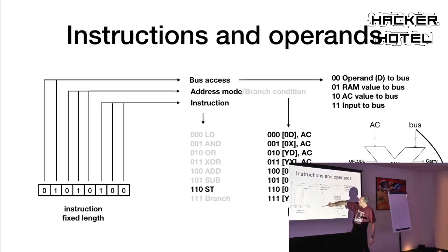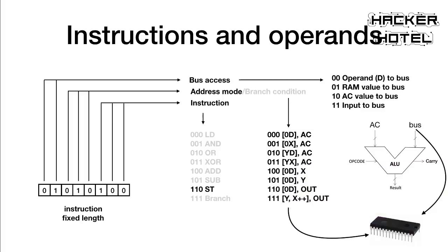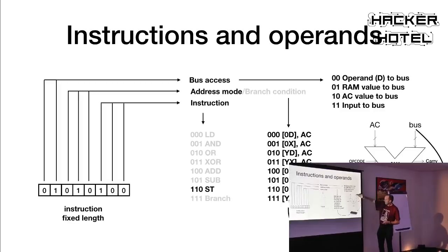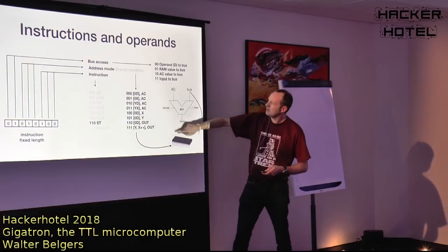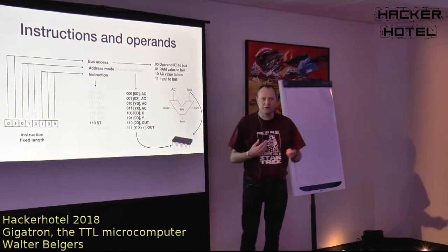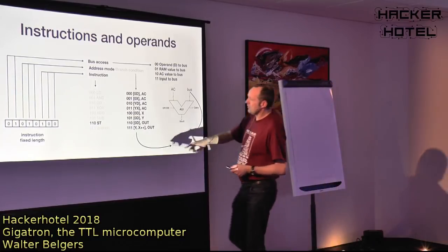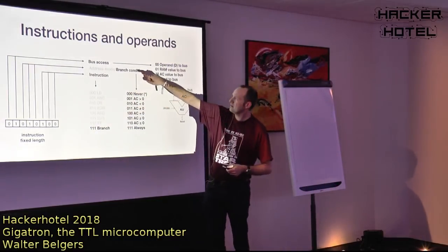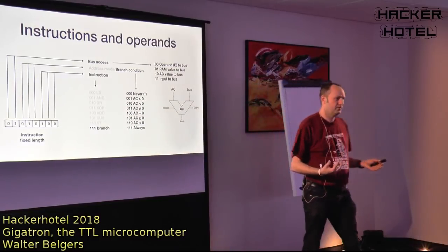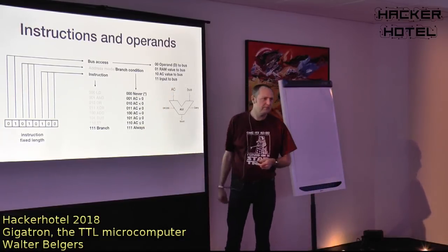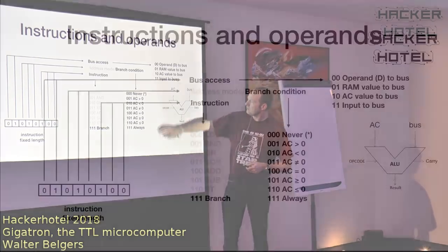There are two more instruction types. One is called store — the only instruction that writes something into RAM. The addressing mode determines which RAM address is written to. The last instruction type is branch: when used, the middle three bits no longer indicate an address mode but the branch condition — eight possible conditions for when the branch executes.